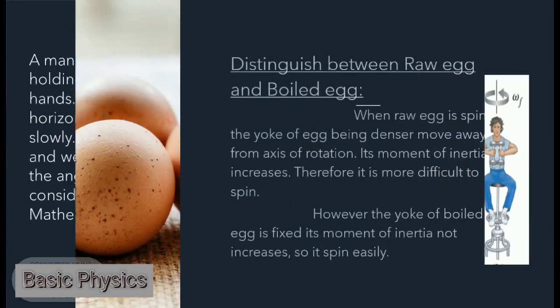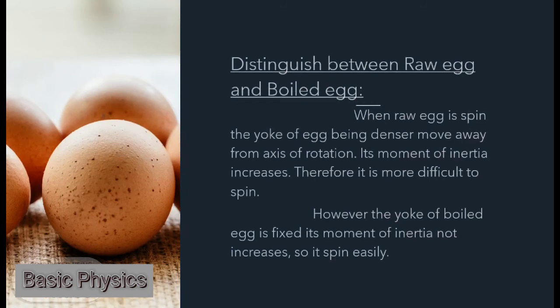Using the law of conservation of momentum, we can distinguish between raw and boiled eggs. When a raw egg is spun, the yolk, being denser, moves away from the axis of rotation, increasing its moment of inertia and making it more difficult to spin. However, the yolk of a boiled egg is fixed, so its moment of inertia does not increase, and it spins easily.